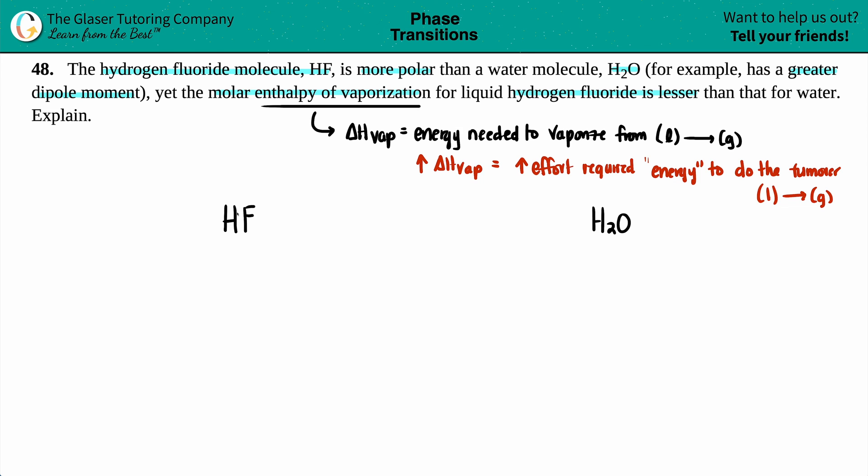Now, if we just draw these Lewis structures real quick, we will see that HF has just a hydrogen single bound to a fluorine, and you got three lone pairs on the fluorine. The H2O has oxygen in the middle surrounded by the two hydrogens and the two lone pairs on one side.